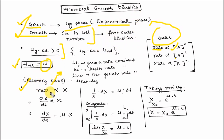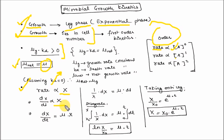What is rate? Rate is the change of biomass per unit time. That is dx/dt is directly proportional to the biomass concentration — it is first order, so x to the power 1. Eliminate this proportionality constant by mu, that is the specific growth rate constant.